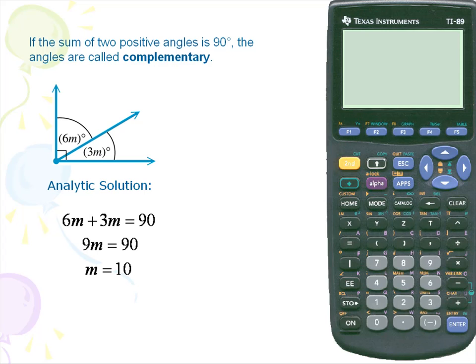And next we'll back substitute m for the value 10. So our first angle 6 times m will give us a measure of 60 degrees. Our next angle 3 times m, m is 10, that'll give us a measure of 30 degrees.